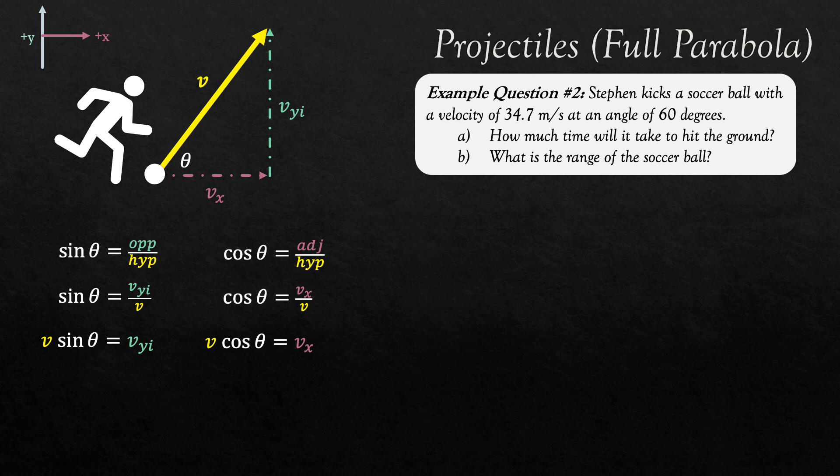So let's proceed to answer the questions. Question A is how much time will it take to hit the ground? And B is what is the range of the soccer ball? Okay. Well, let me plug in the numbers from the question. The hypotenuse is 34.7 meters per second. And multiplying that by sine of 60 and cosine of 60, I get my two vector components. My initial vertical will be 30 meters per second. And my velocity on the horizontal, which is not initial but constant, is 17.4 meters per second.